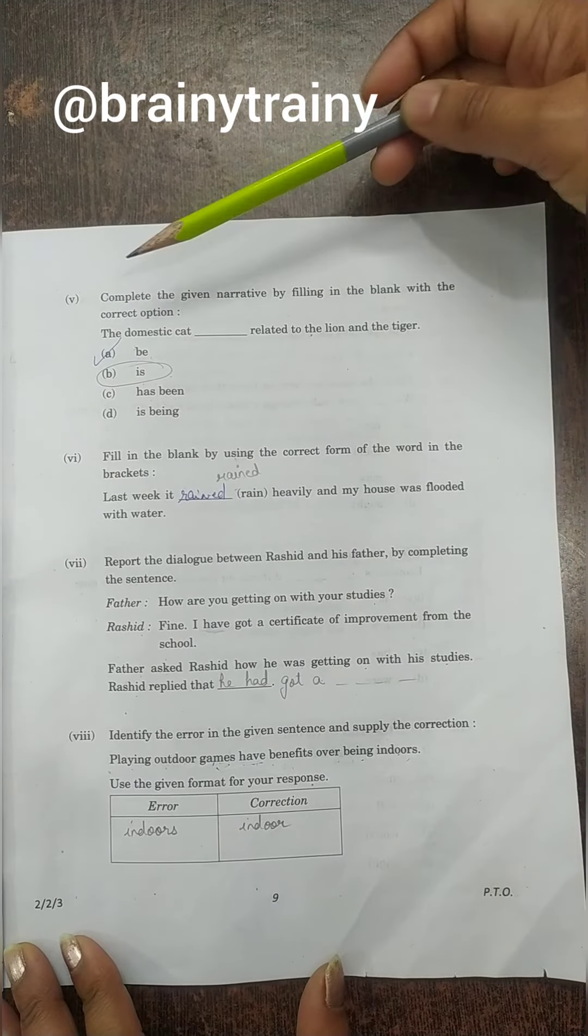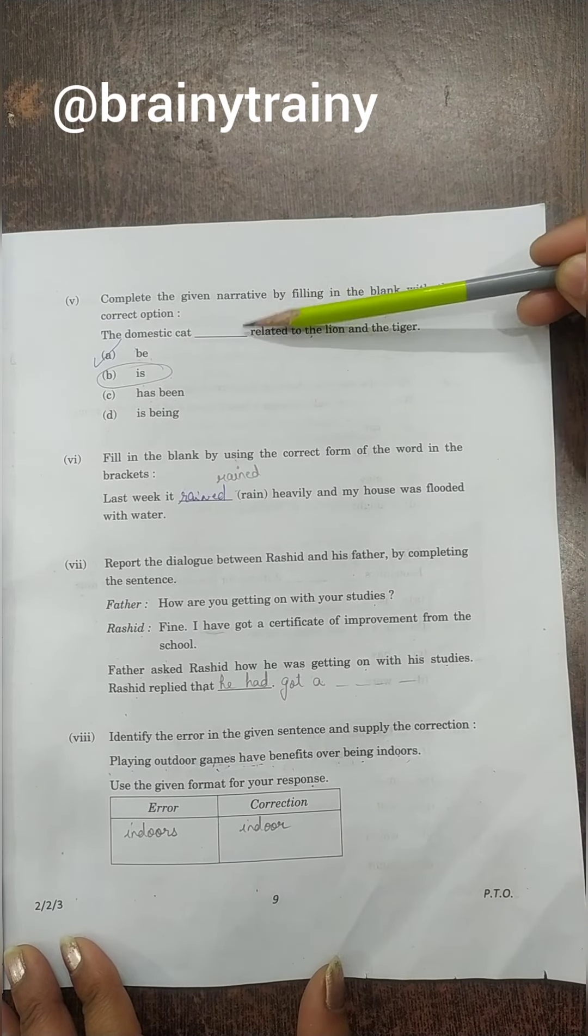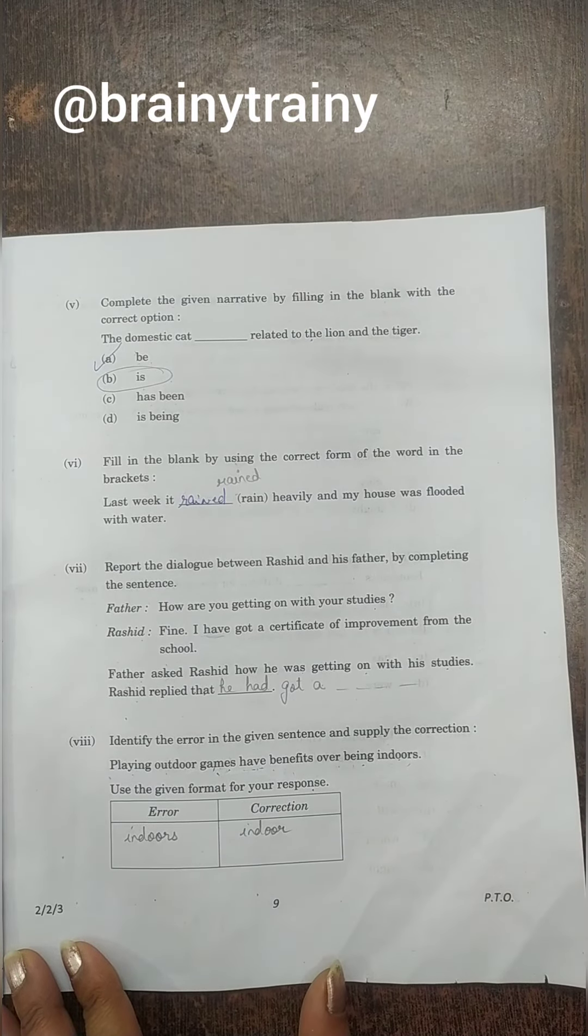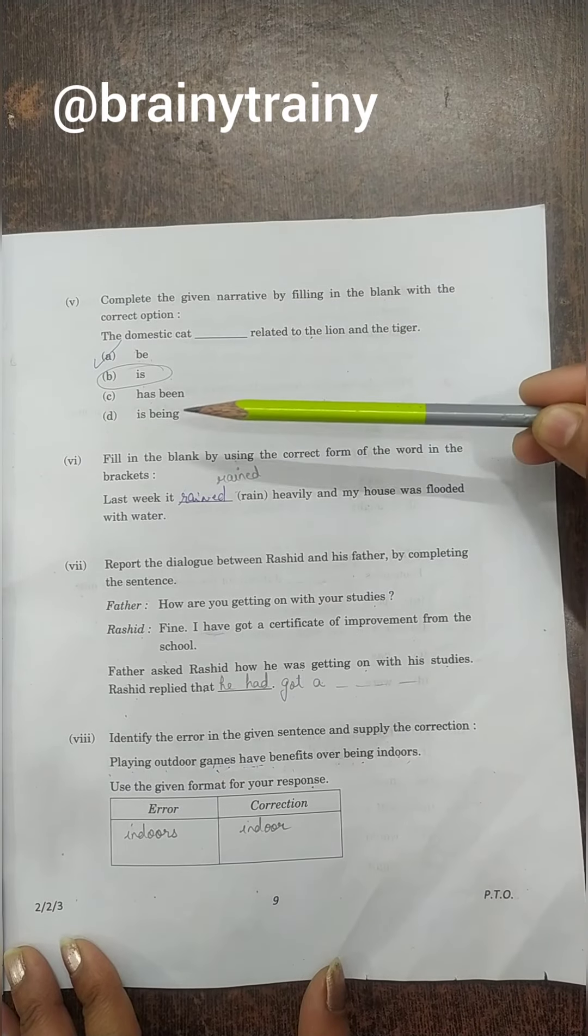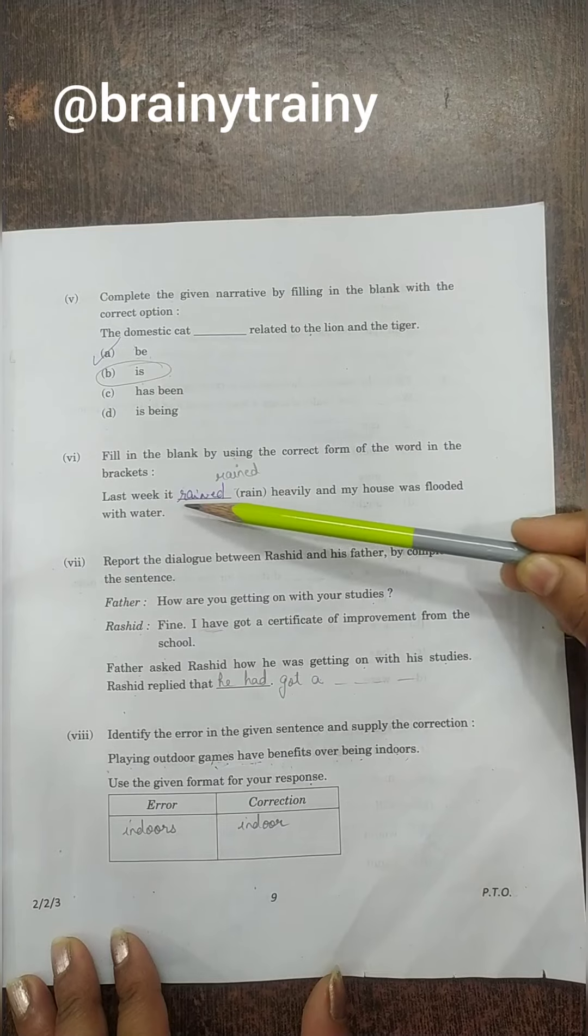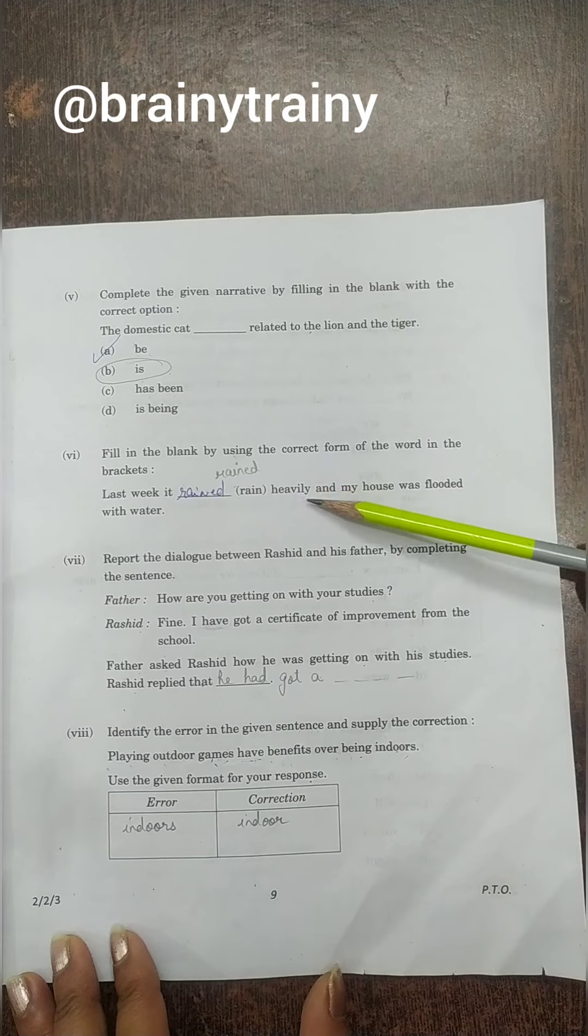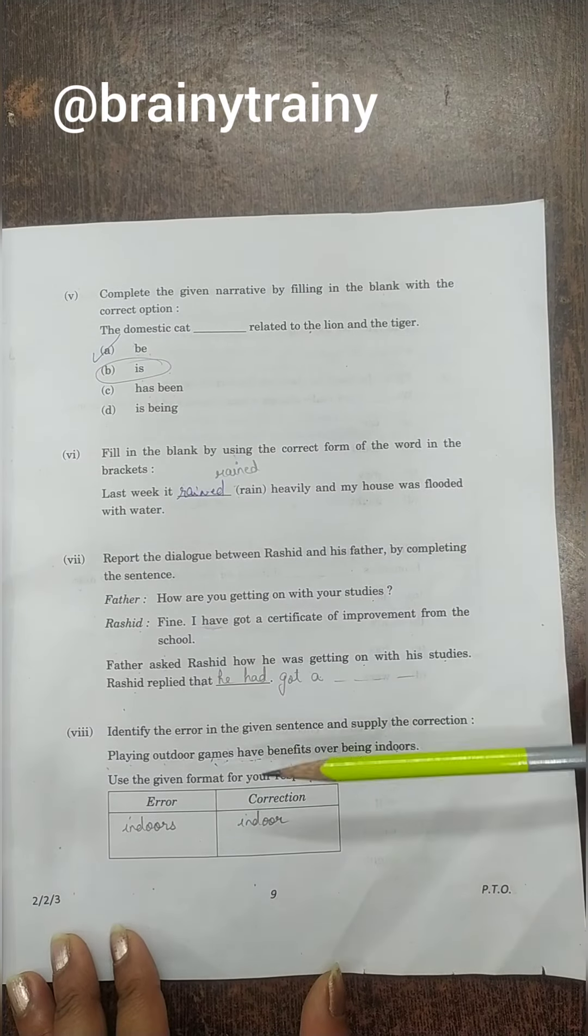Next, question number 5: The domestic cat dash related to the lion and the tiger. This answer is 'is'. The domestic cat is, because we still have to relate it until now. Next is: Last week it dash heavily. Now last week is past tense. It will be 'rained'. It rained heavily and my house was flooded with water.